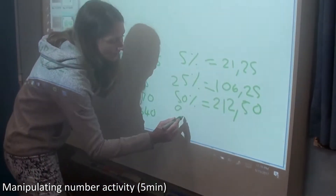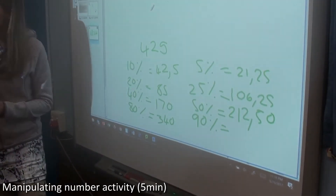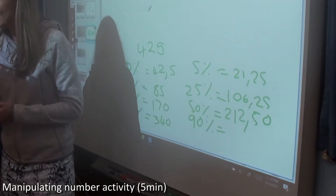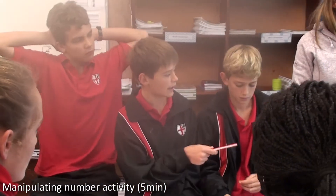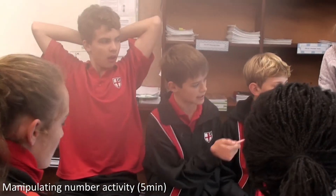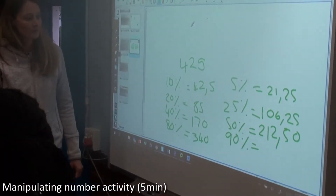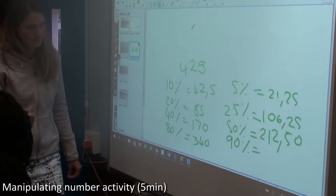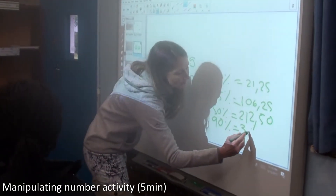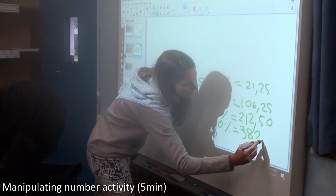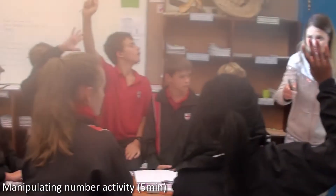Well done. Is there another way we could have worked out 50% easily? So 50% is a half of 100%. So you can halve 425: half of 400 is 200, half of 20 is 10, and half of 5 is 2.5, which gives you 212.5. Brilliant. How could we easily work out what 90% of 425 is? You could say 80% plus 10%. Good. So you'd say 340 plus 42.5, which gives 382.5.